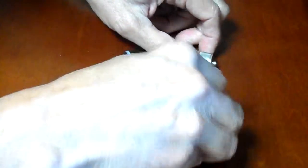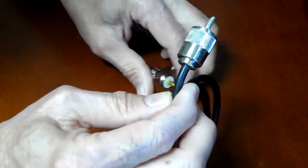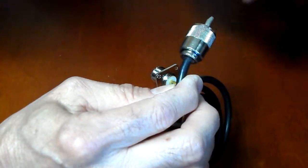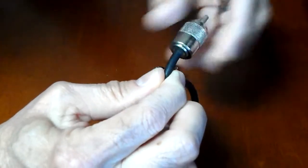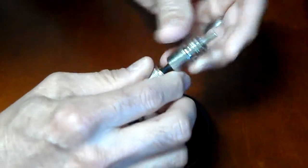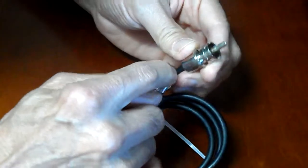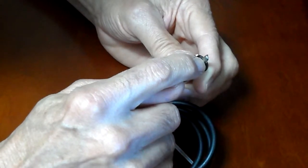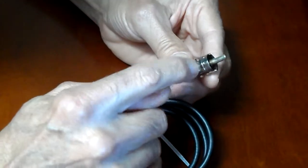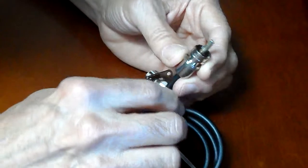Now here, first of all, this is the PL259, and the first thing I want to show you is the connections from the coax here. One goes to this center stud, and the other is soldered to this assembly.